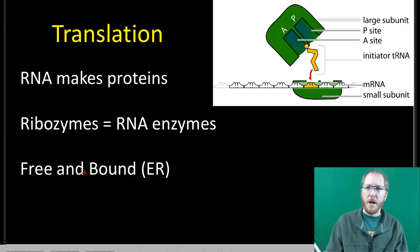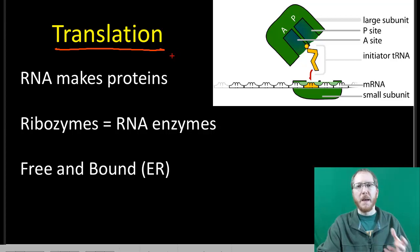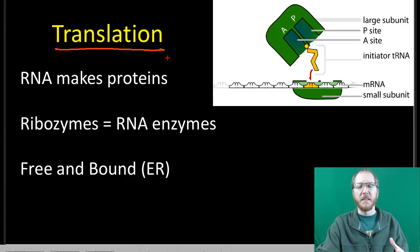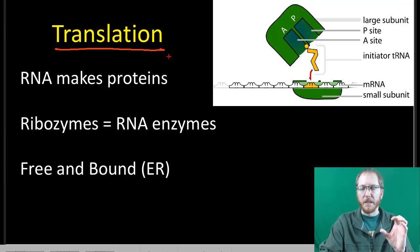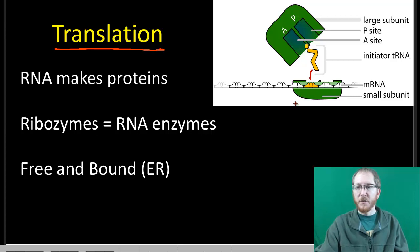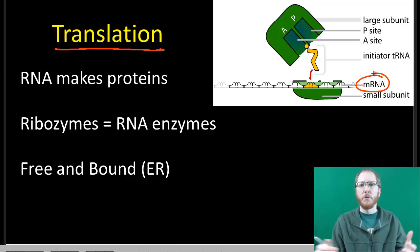Translation is a process we'll briefly touch on here. This is the name for the process by which ribosomes make proteins. A ribosome reads an mRNA — that's the message — and builds the protein according to the directions encoded in that mRNA. So the mRNA is the blueprint, and the ribosome looks through that blueprint, determines what goes where, gets the right amino acids, and builds the protein in question. That process is called translation.